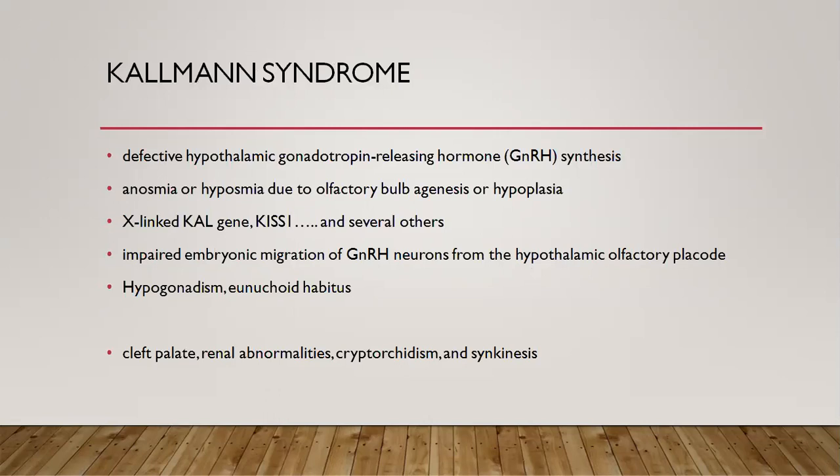Kallmann syndrome is something we sometimes see in clinical practice. It includes anosmia or hyposmia along with hypogonadism. There is a defective GnRH secretion, and the anosmia or hyposmia is because of olfactory bulb agenesis or hypoplasia. The gene is the KAL1 gene, and there are several other genes which may also cause this condition.